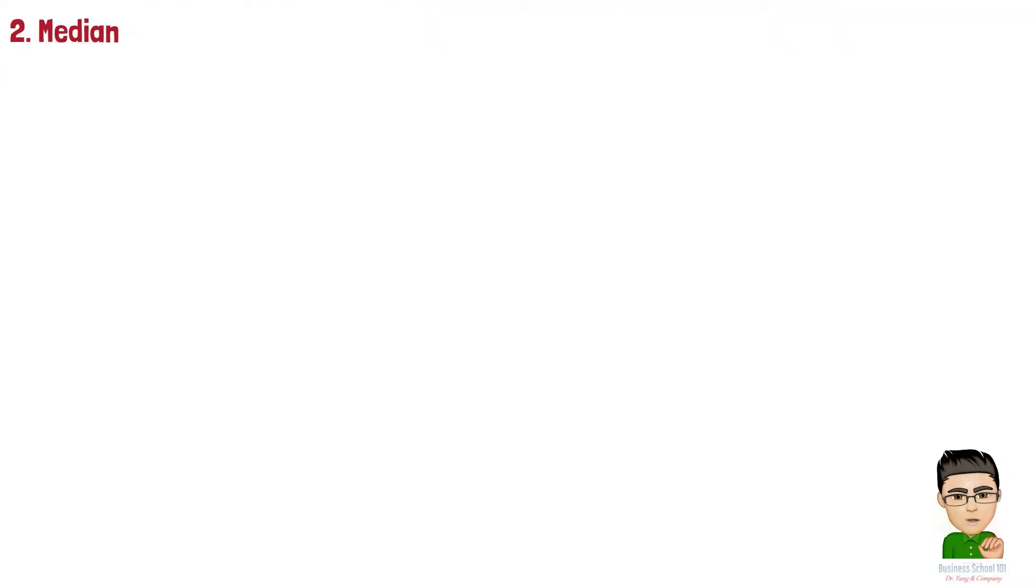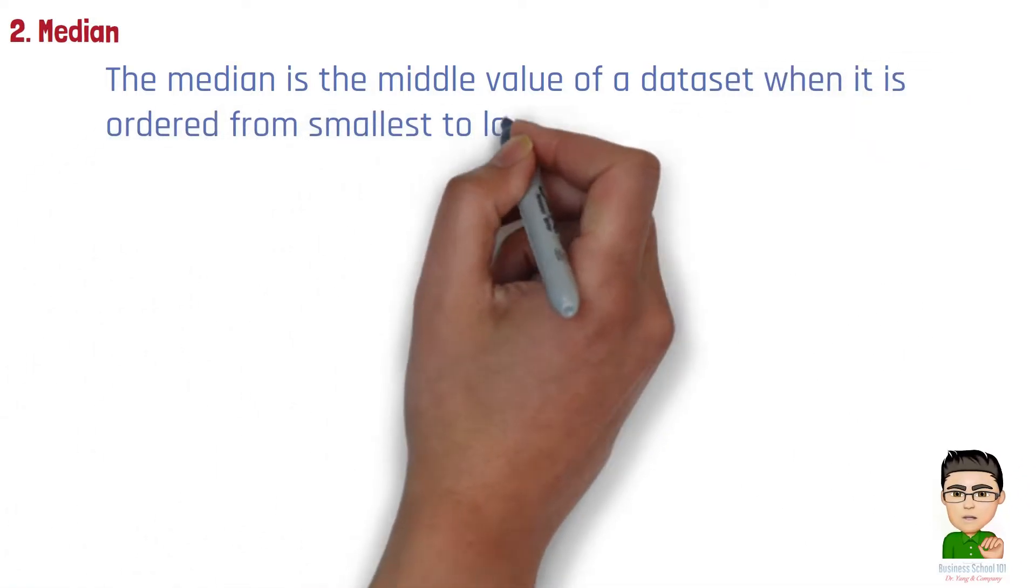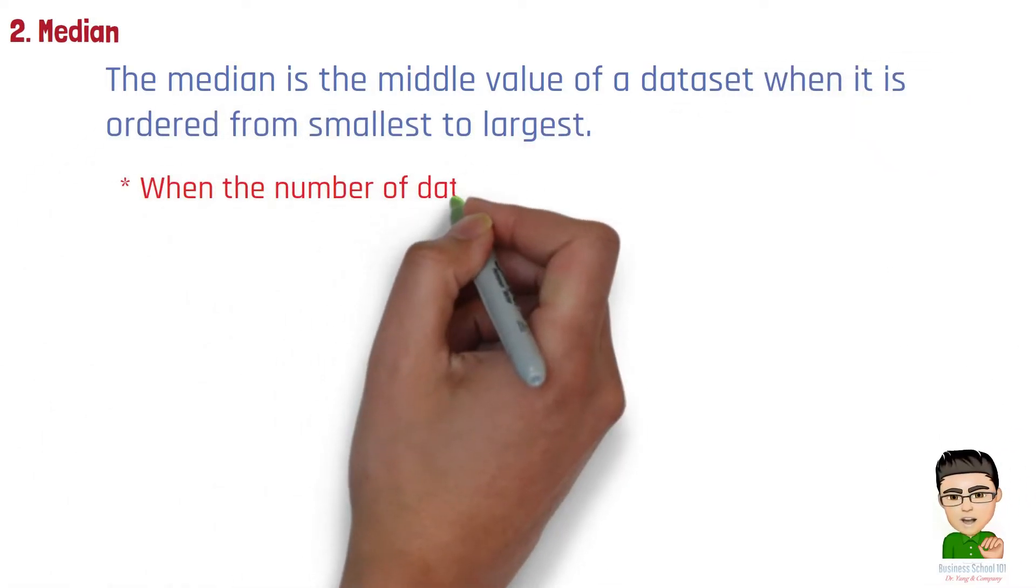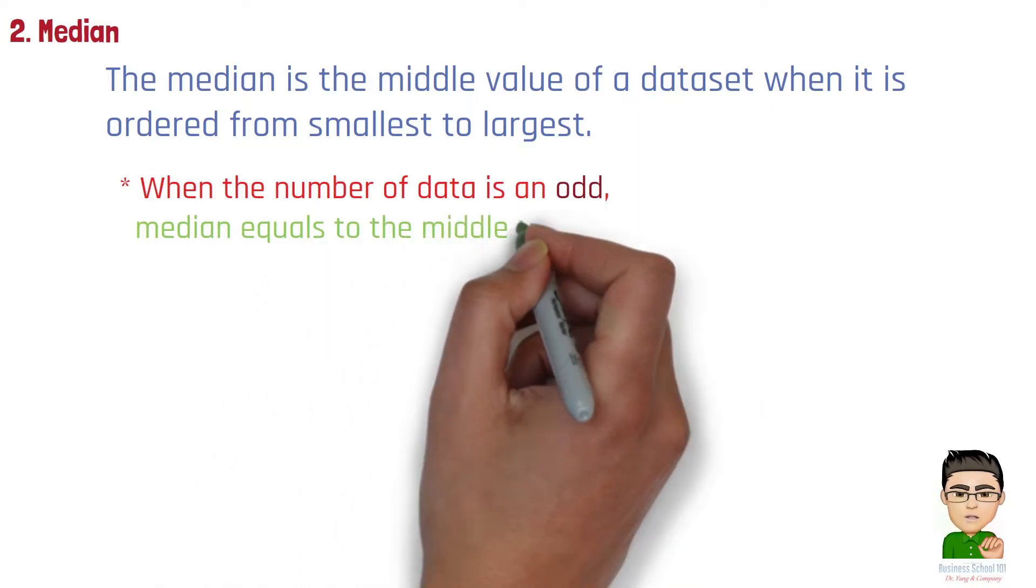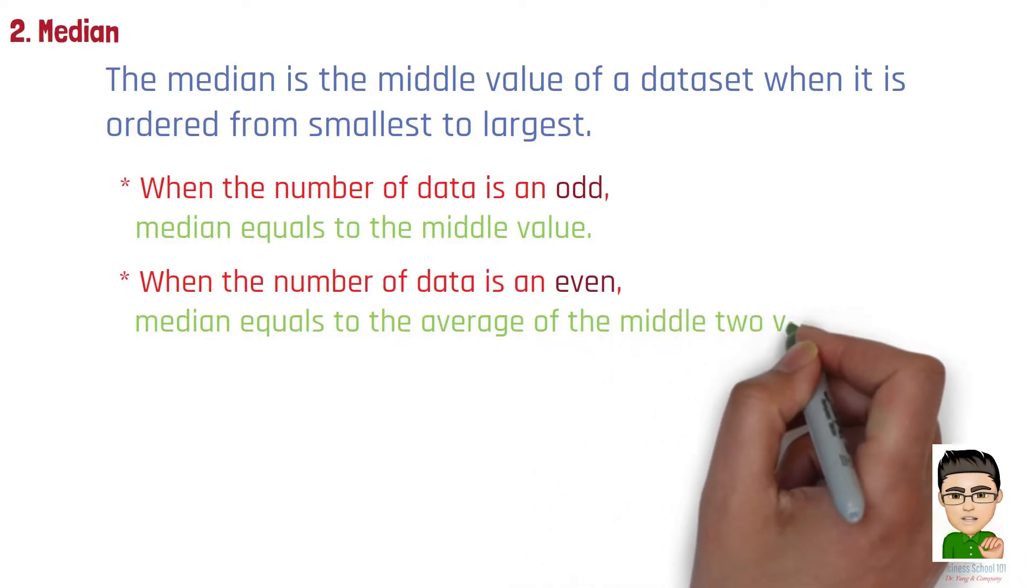Section 2: Median. The median is the middle value of a dataset when it is ordered from smallest to largest. When the number of data is an odd, median equals the middle value. When the number of data is even, median equals the average of the middle two values.